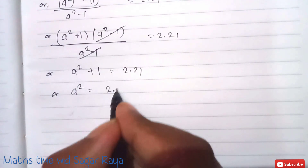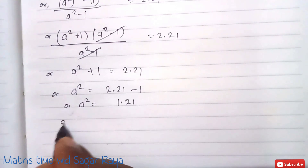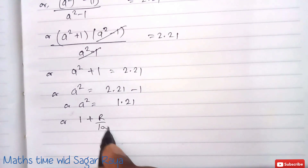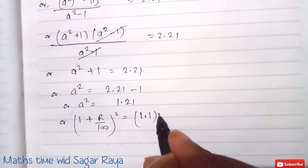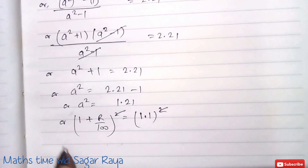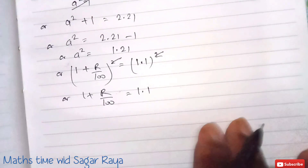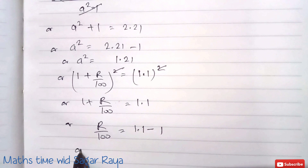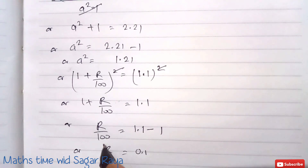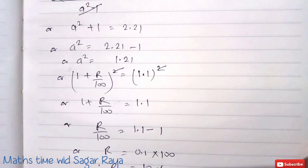So a squared equals 2.21 minus 1, which is 1.21. Substituting back, (1 plus R by 100) squared equals 1.21, which equals 1.1 squared. Cancelling the squares gives 1 plus R by 100 equals 1.1, so R by 100 equals 0.1, and therefore R equals 10. The rate of interest is 10 percent.